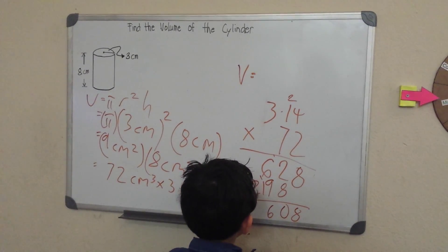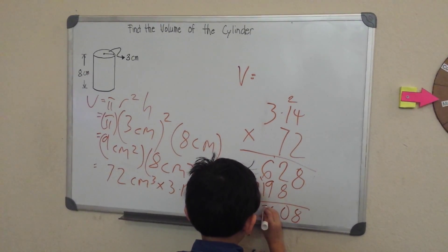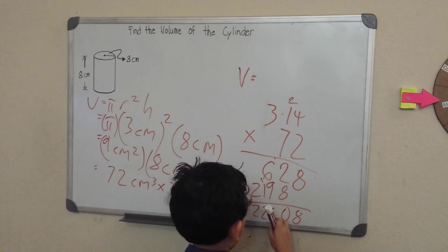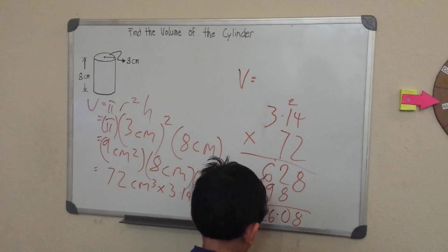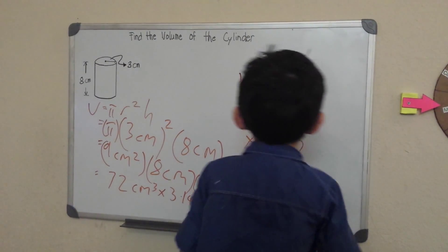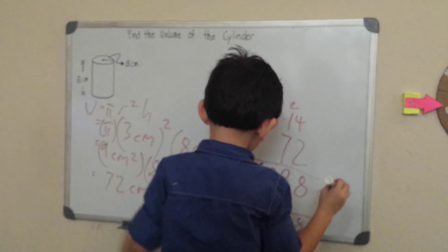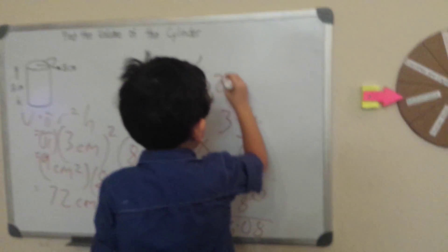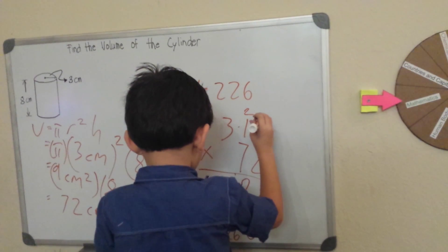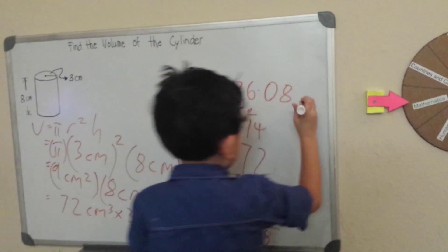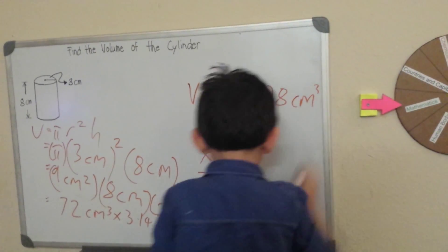Give me 1, 1 plus 1 is 2, and bring down that 2. See what I have here, 1 and 2, 1 and 2, 226, 48. So the volume for this cylinder is 226.08 centimeters cube.